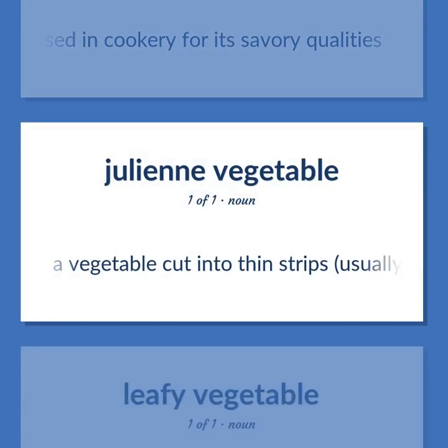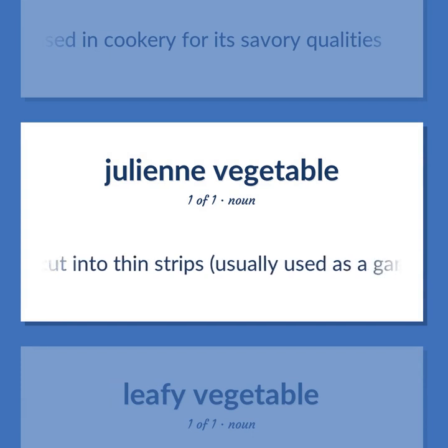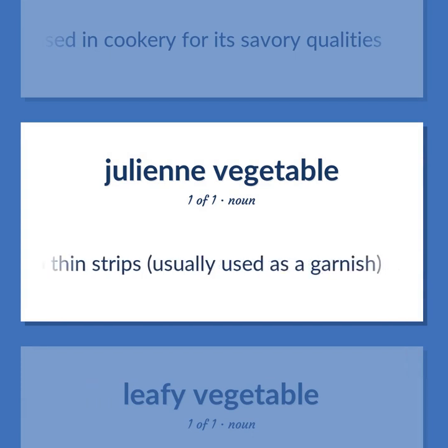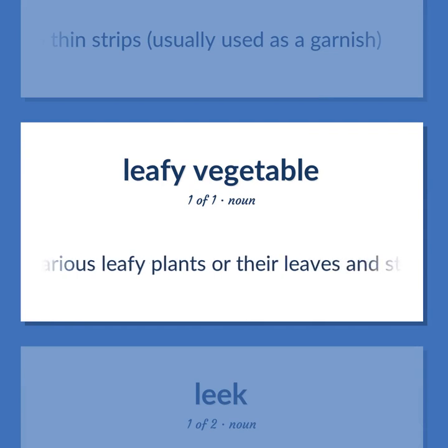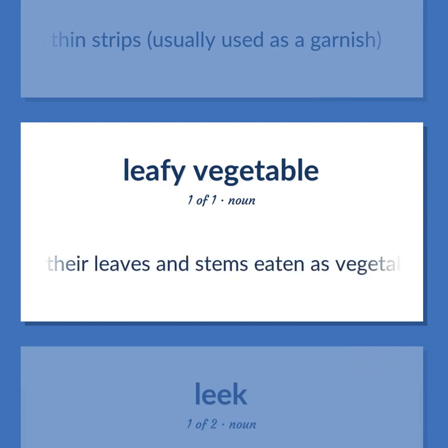Culinary herb: An aromatic potherb used in cookery for its savory qualities. Julienne: A vegetable cut into thin strips, usually used as a garnish. Greens: Any of various leafy plants, or their leaves and stems, eaten as vegetables.